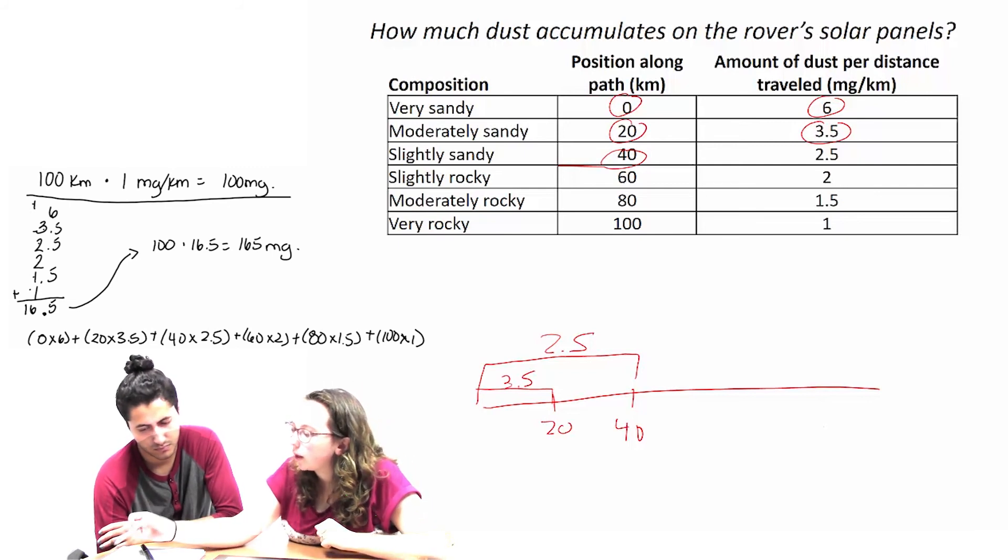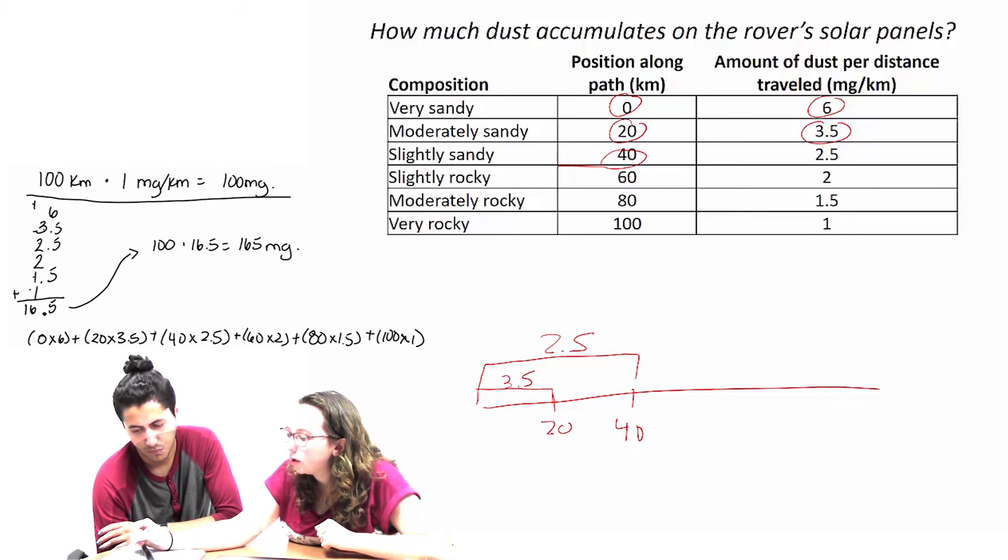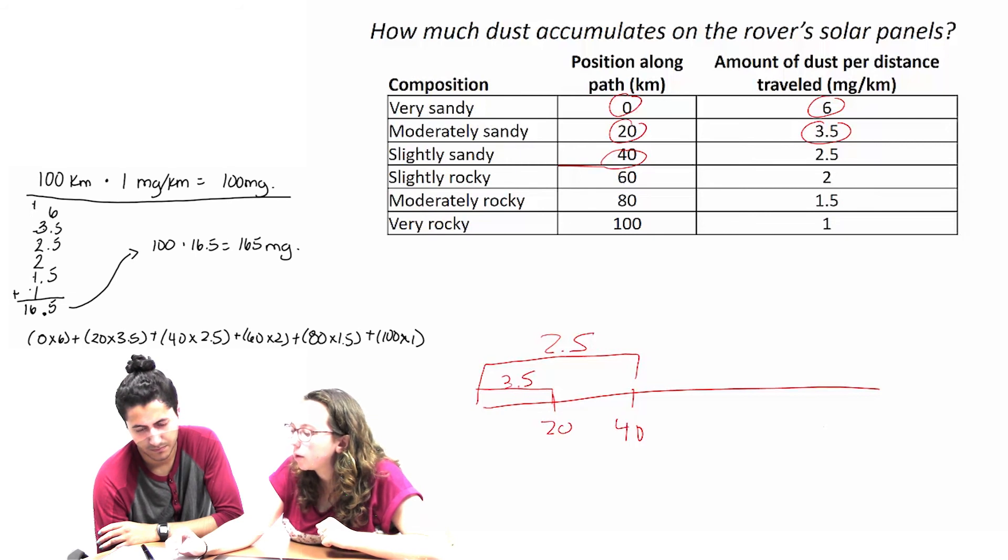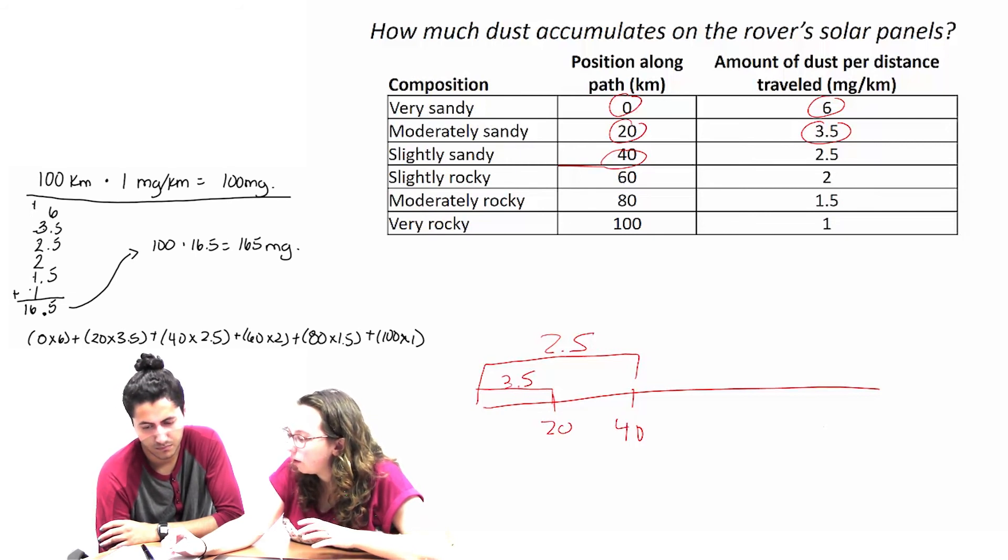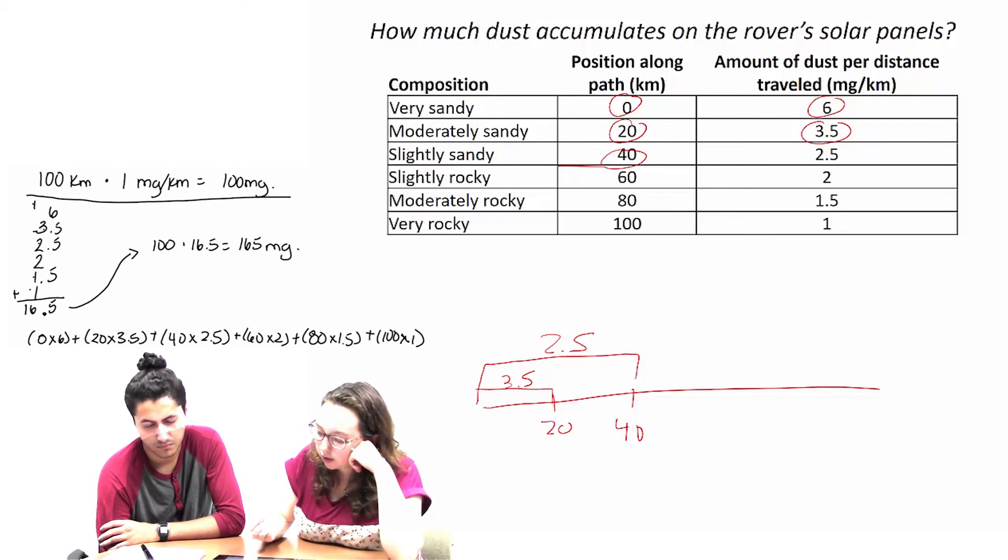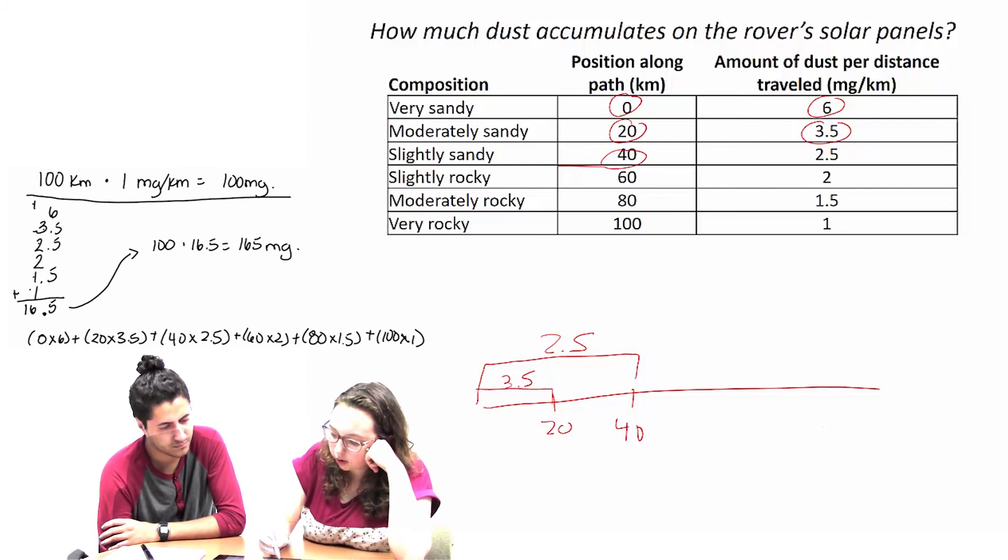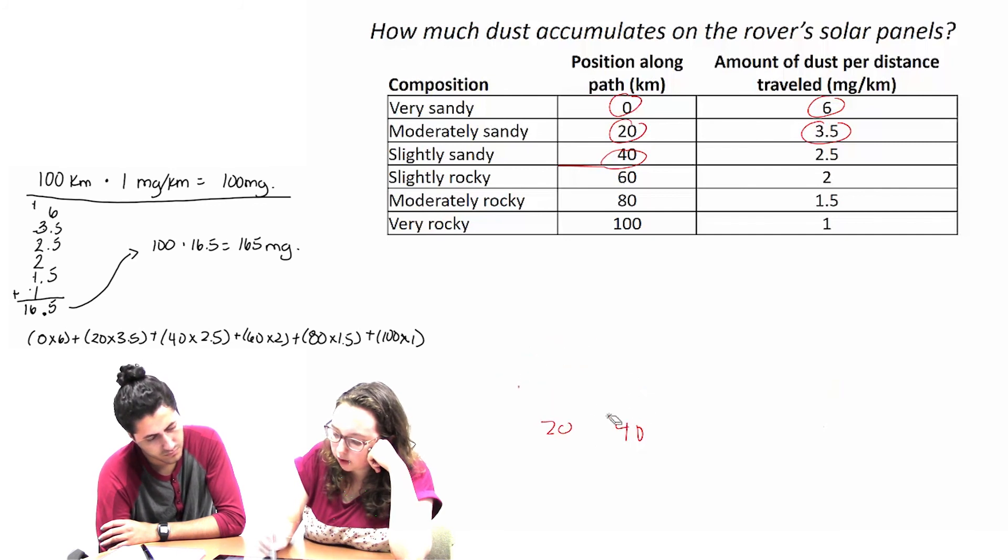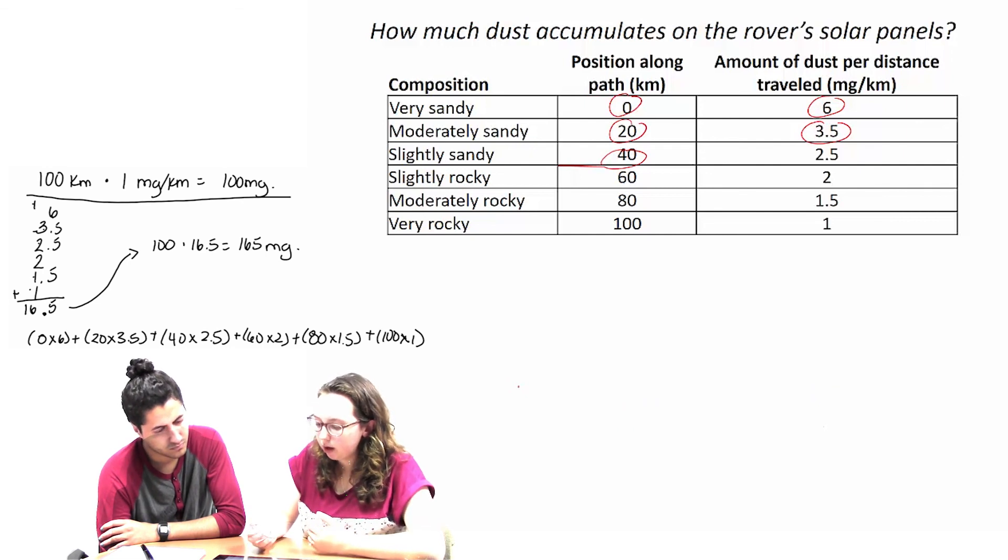Like the same reason why this 100 times 1, that was my first thinking and then we kind of ruled that out. So I think that's doing that multiple times. So I don't think that's gonna work. I think somehow we need to incorporate that we're changing along the way.